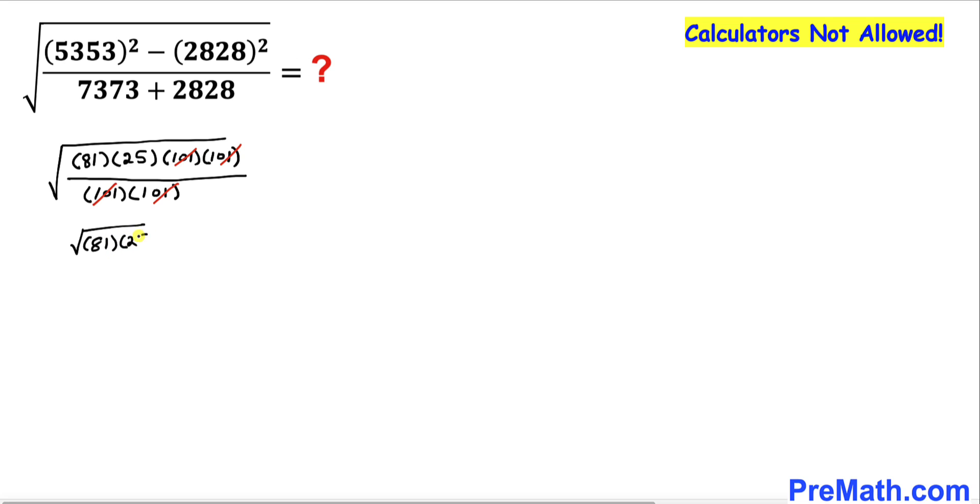I can break it down to square root of 81 times square root of 25. We know that the square root of 81 is 9, and this one is 5.